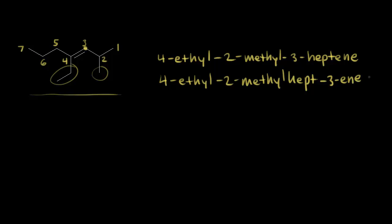Now we have to think about our double bond — is it E or Z? Let's start with the carbon on the right side of the double bond. We're comparing the atoms directly bonded to that carbon: a hydrogen and a carbon. Carbon has the higher atomic number, so this group gets higher priority — number one — and hydrogen gets a number two. For the left side, the atoms directly bonded to that carbon are a carbon and a carbon, so there's a tie.